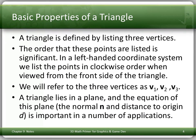Basic properties of a triangle. A triangle is defined by listing three vertices. The order that these points are listed is significant. We're going to be using a left-hand coordinate system. We're going to list the points in clockwise order when viewing from the front side of the triangle. We'll refer to the three vertices as V1, V2, and V3. A triangle lies in a plane — three points define a unique plane, unless they're collinear.